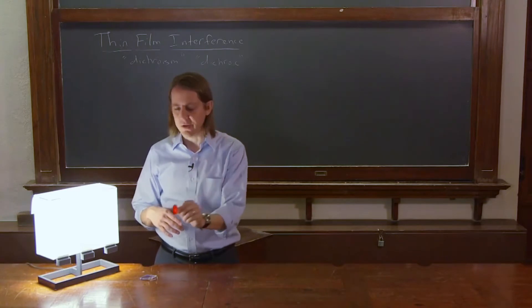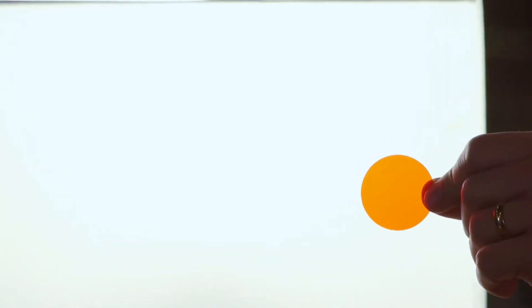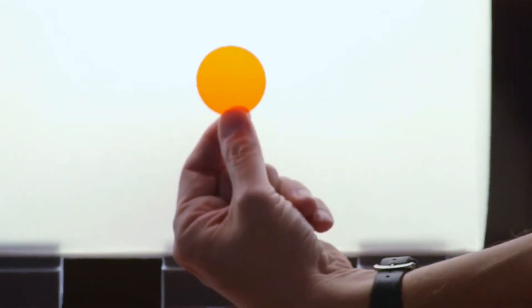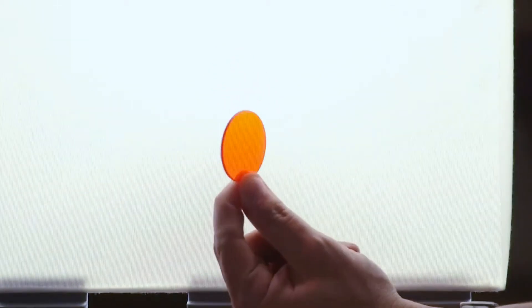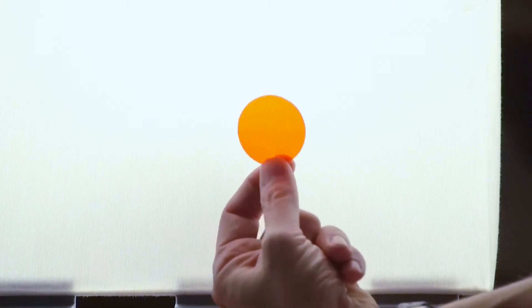So this is our filter. And the only reason it has color is there's little dyes and ions and impurities absorbing light in the glass. And you can tell because when we look at the color on the lamp and if you turn it, there's no difference. It looks the same color as you turn it through these angles.